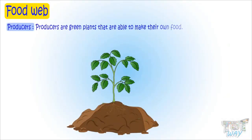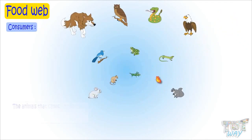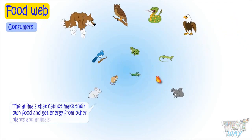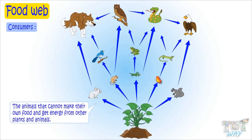Producers make their own food by absorbing nutrients and water from the soil through the process of photosynthesis. Consumers are the animals that cannot make their own food and get energy from other plants and animals.